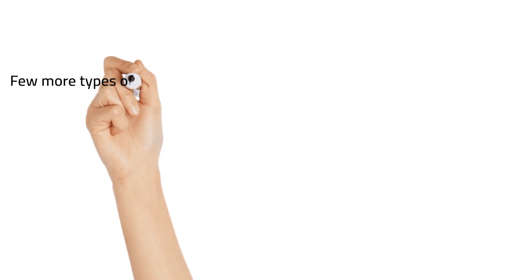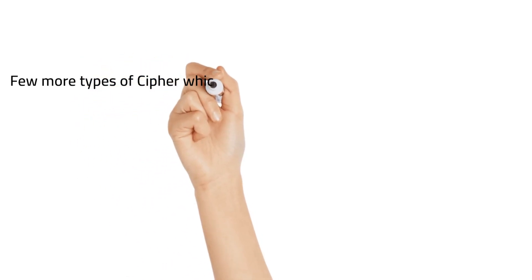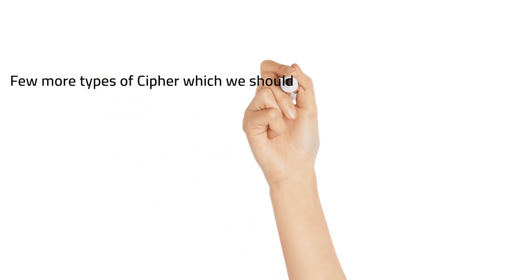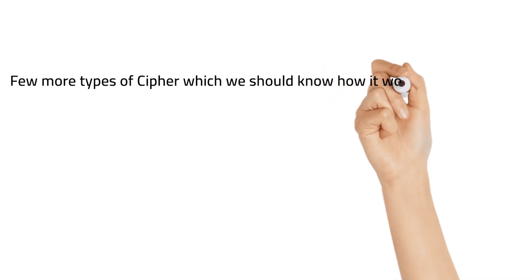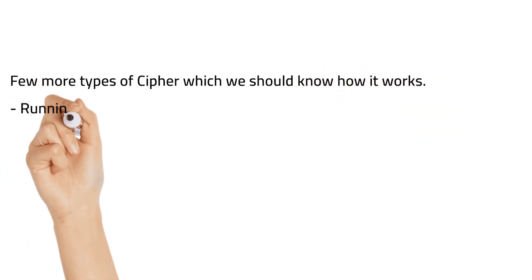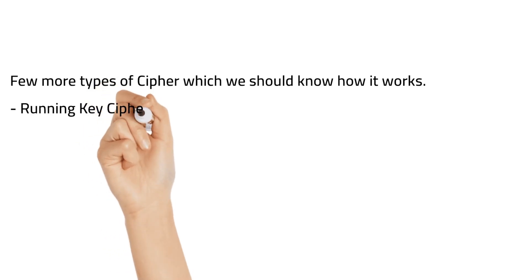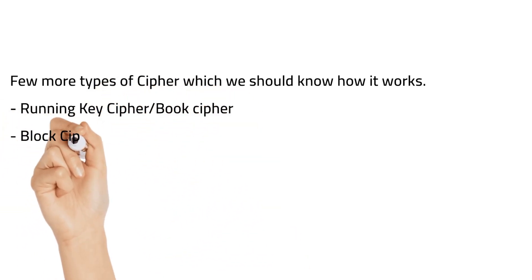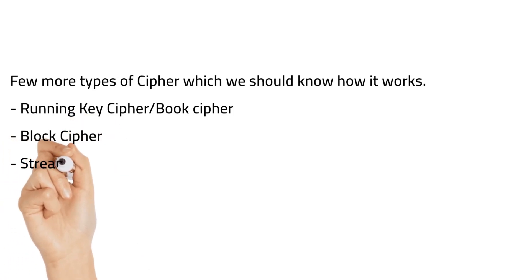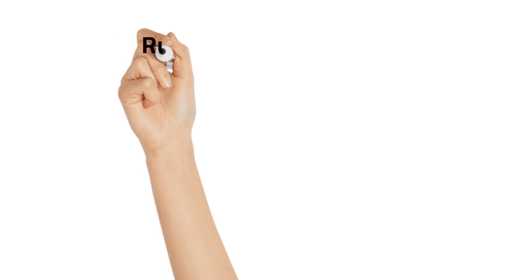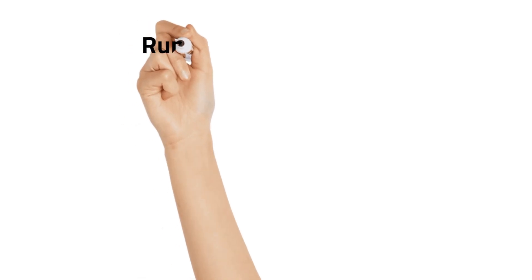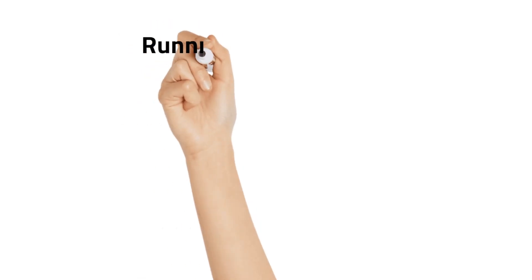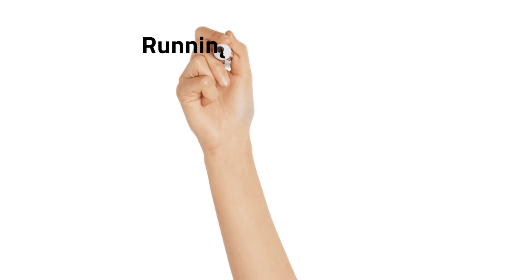In my previous video I explained substitution cipher and transposition cipher with various examples. We should know a few more types of ciphers and how they work. Those are: running key cipher, stream cipher, and block cipher. Let's see them one by one, starting with running key cipher.